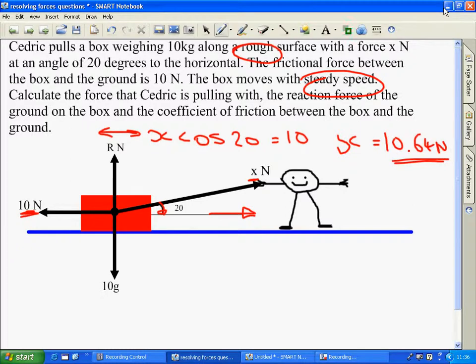Similarly, we can resolve vertically. We know this force acting down of 10g is equal to the reaction force. So, that's 10g is equal to the reaction force R plus,